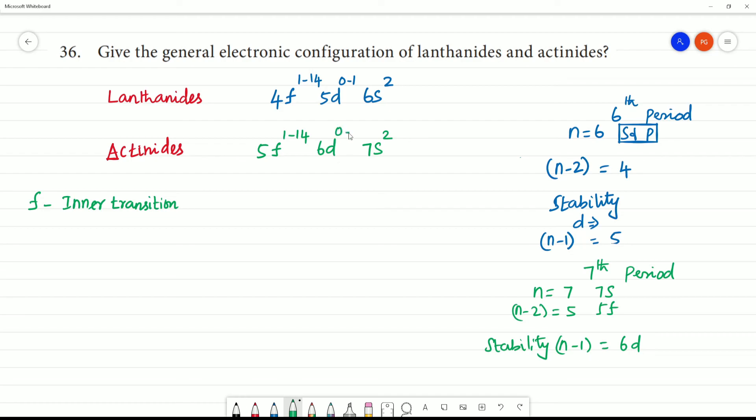6d will be 0 to 1. In this 6d, we need stability and we need the penultimate shell or the inner transition element, we need to concentrate on F. Then this will be filled. Clear?